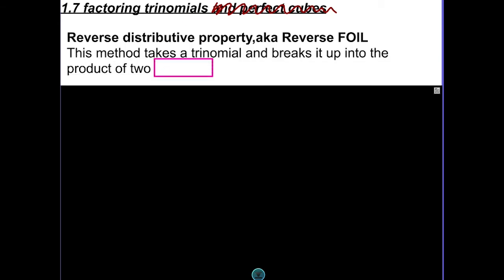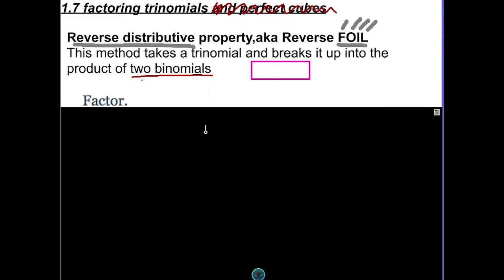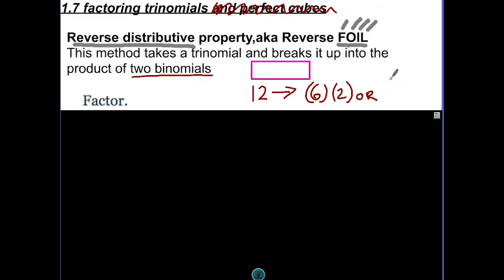This process, sometimes it's referred to as the reverse distributive property, also reverse foil. Some teachers talk about foil first, outside, inside, last. And basically, the reason why they talk about this is when you take a trinomial, which has three terms, and you break that up, you're going to break that up into two binomials. So you're going to find two factors that multiply to be that polynomial. Another way to think about that is we talked about this theme earlier. Basically, if we're going to factor 12, we can factor that into 6 and 2, or we could also factor it into 4 and 3, so on and so forth.